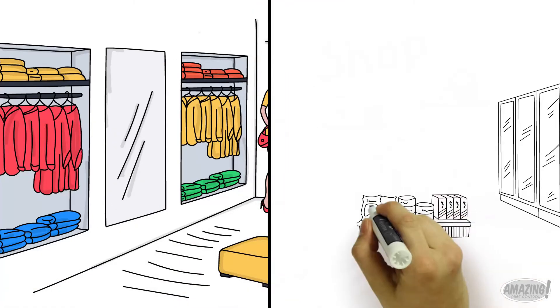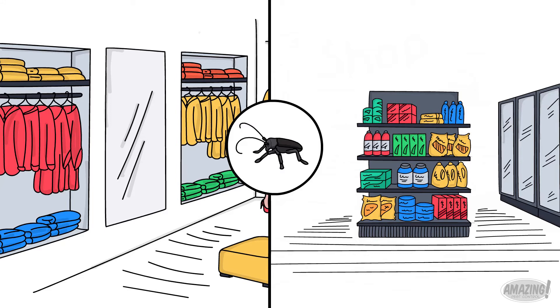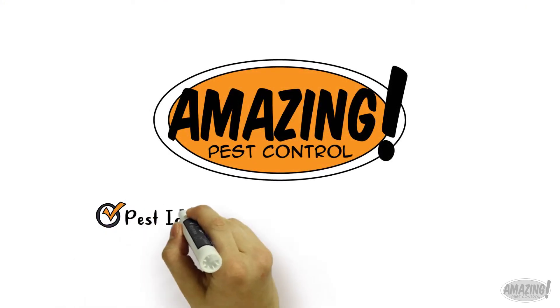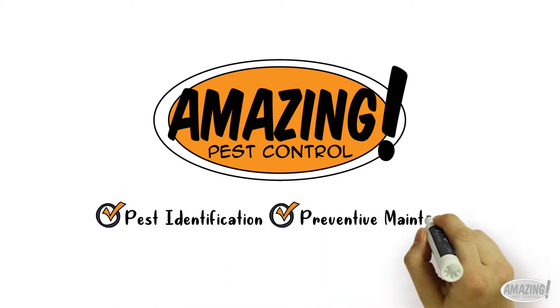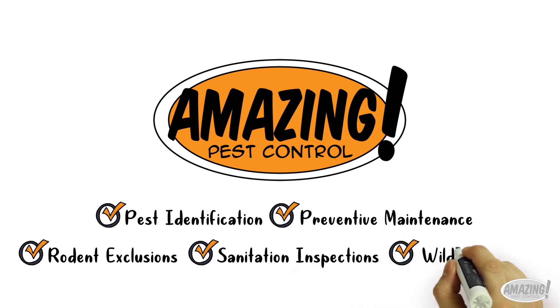Are you a national chain store or restaurant business that is unhappy with your facility maintenance pest control service? Amazing Pest Control is the best source for pest identification, preventative maintenance, rodent exclusions, sanitation inspections, wildlife control, and more.